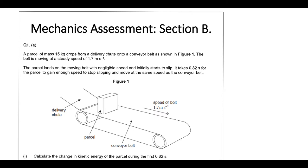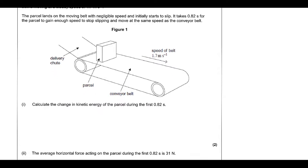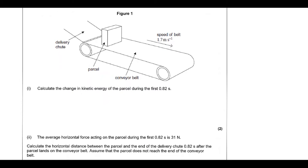Alright, so let's have a look at section B of the recent half-term assessment. We're going to start off looking at some energy. We've got a parcel dropped onto a delivery chute and the belt is moving at 1.7 meters per second.